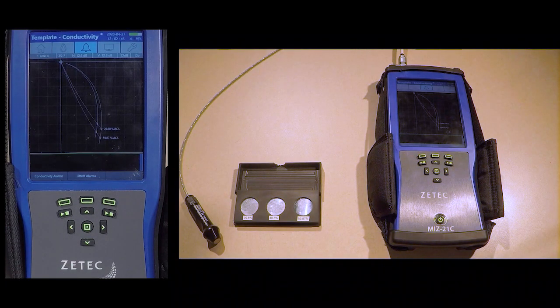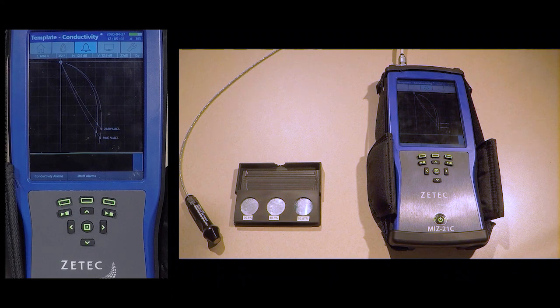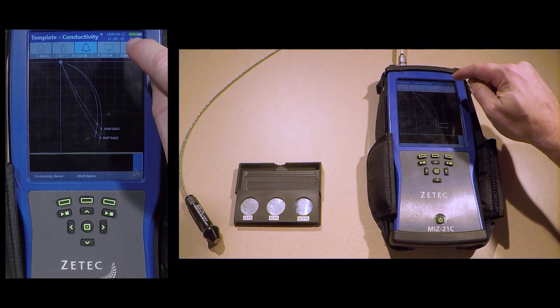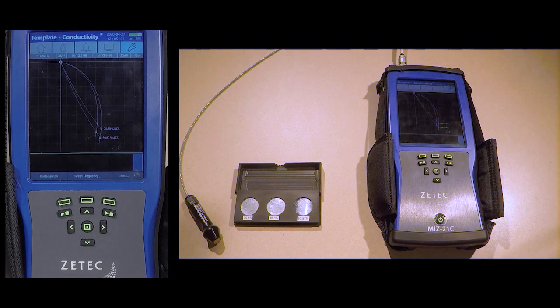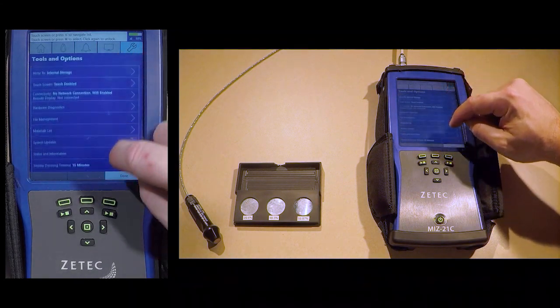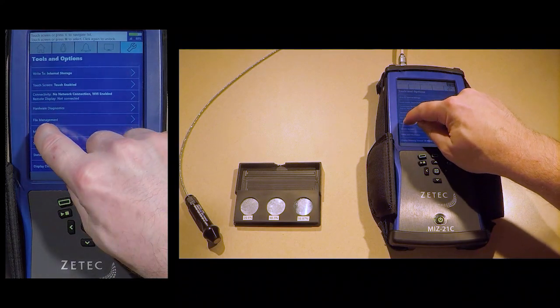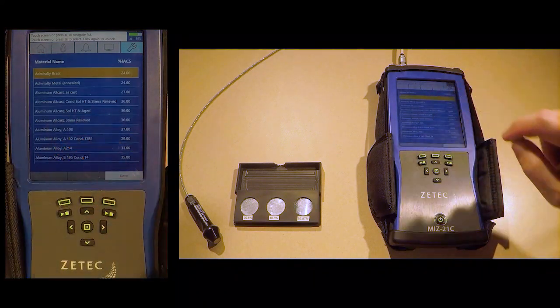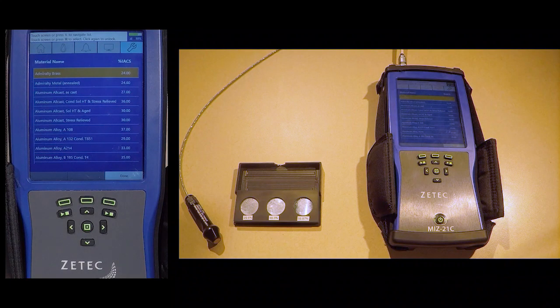To access the materials list if in acquisition mode, press the Stop Play button to stop the acquisition. Select the Tools icon in the upper right corner. Tap Tools in the lower right corner. Use your finger to slide the menu up and tap Materials List. A list of materials is displayed with defined IACS specifications to assist in setup for your specific use.